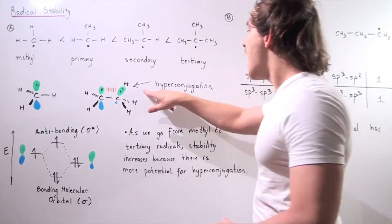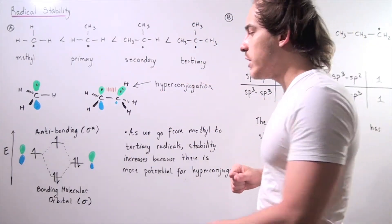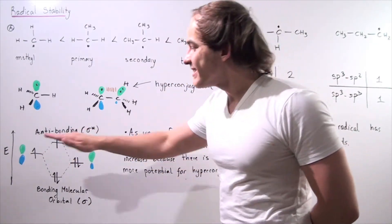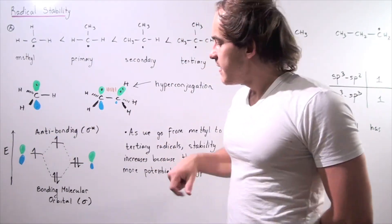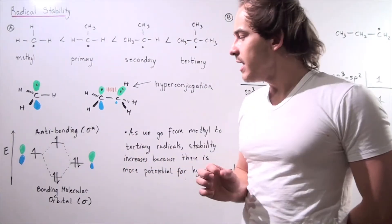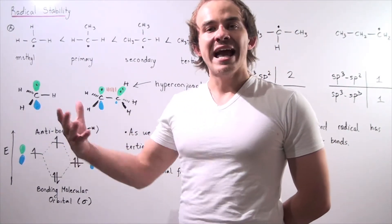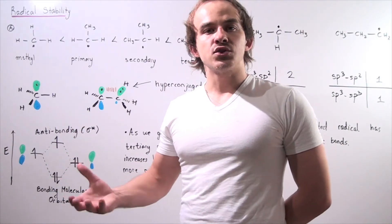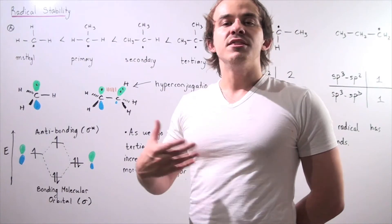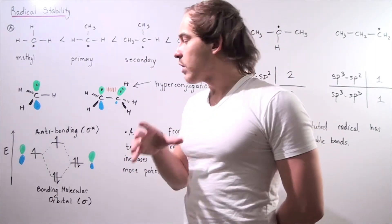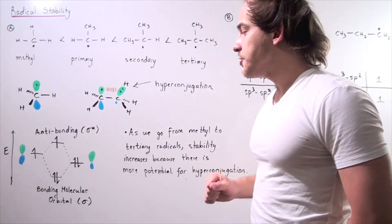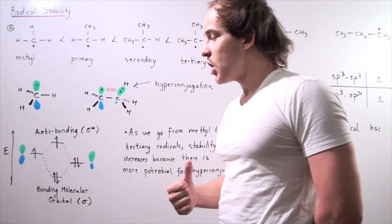Looking at the energy diagram, the 2P orbital is slightly higher in energy than the sp3 hybridized orbital. That's because the more s-character we have, the closer our electrons are to the nucleus — the protons of the nucleus — and therefore the more stable our atom is. That's exactly why the sp3 atomic orbital is slightly lower in energy.